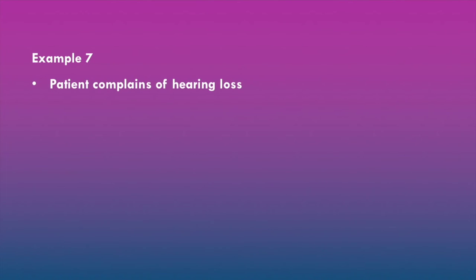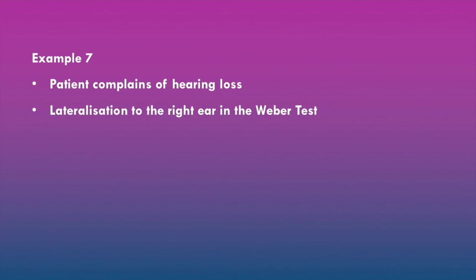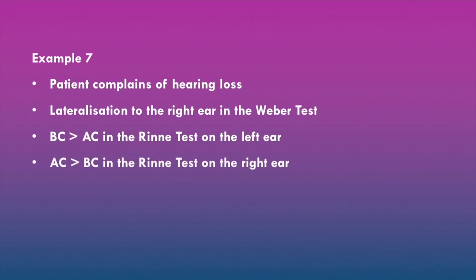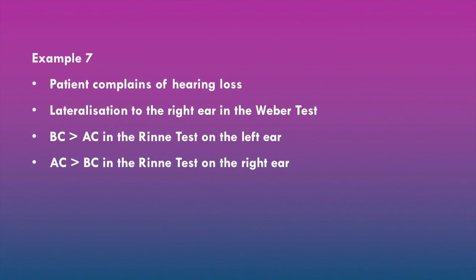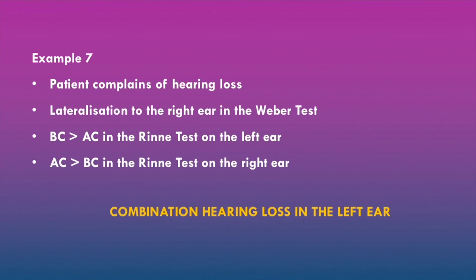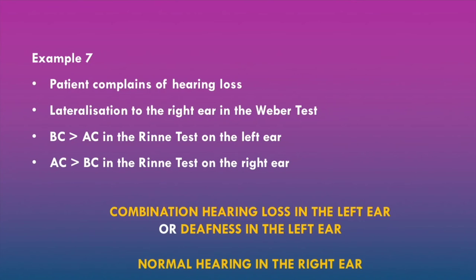In example seven, we have a patient who complains of hearing loss. There is lateralization to the right ear in the Weber test. Bone conduction is greater than air conduction in the Rinne test on the left ear, and air conduction is greater than bone conduction in the Rinne test on the right ear. There are two possibilities for the left ear: combination hearing loss — both conductive and sensorineural — or complete deafness, also known as anacusis. There is likely normal hearing in the right ear.